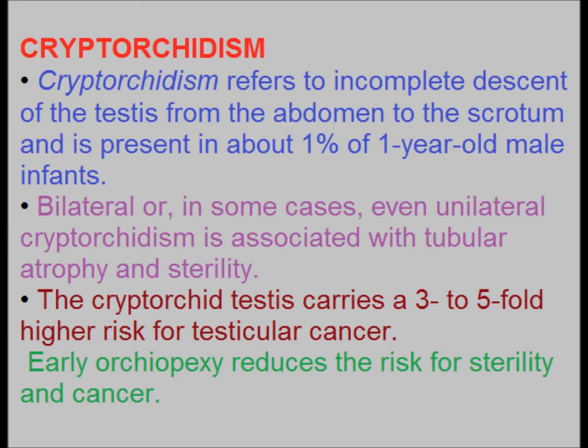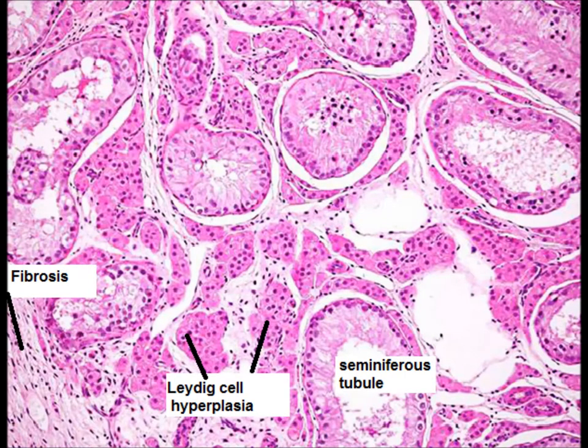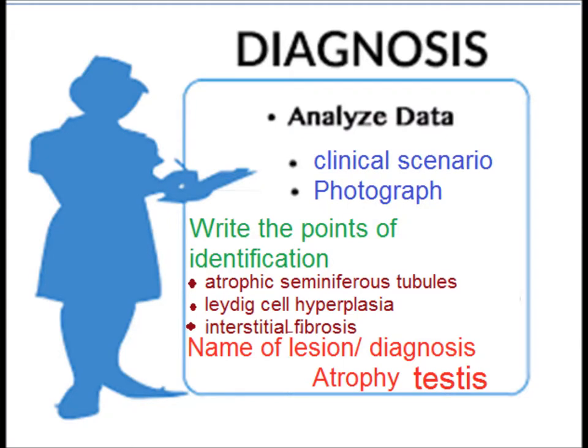The biopsy will show typical features: seminiferous tubules are atrophic, Leydig cell hyperplasia, and fibrosis. The diagnosis involves analyzing the data, clinical scenario, and photograph. Points of identification are: atrophic seminiferous tubules, Leydig cell hyperplasia, and interstitial fibrosis.